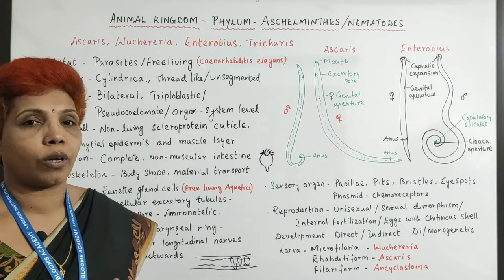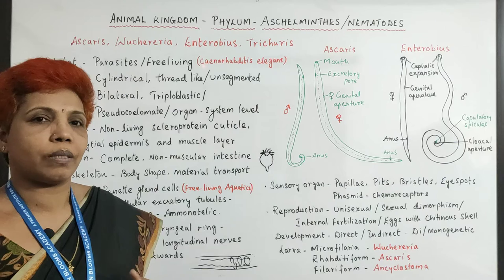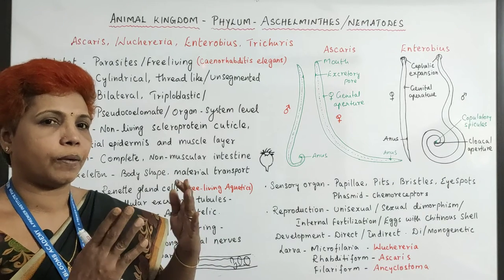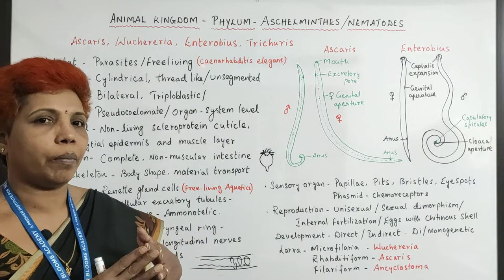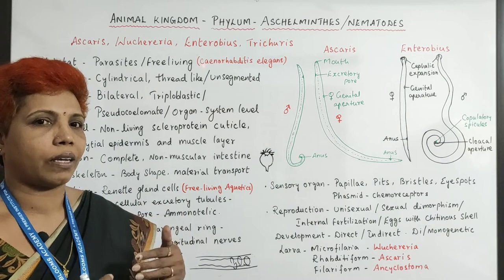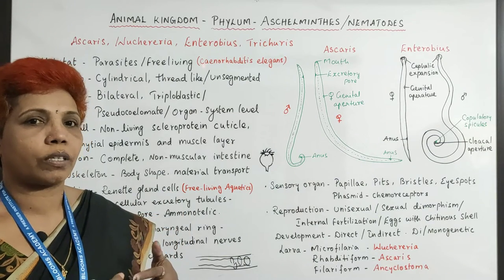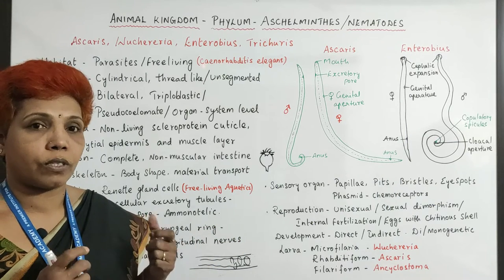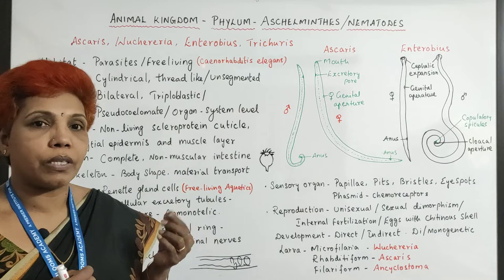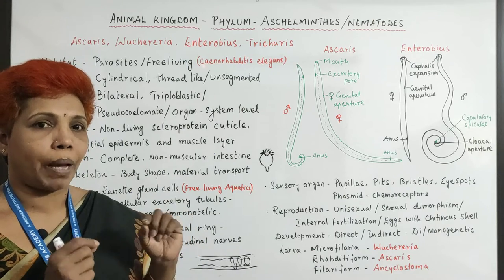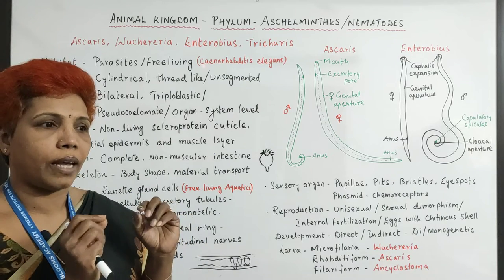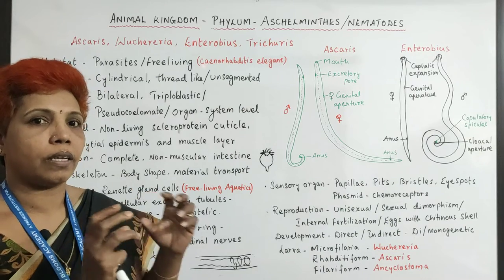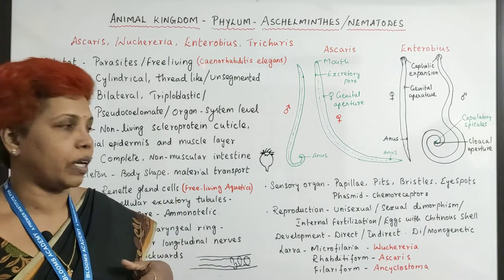When talking about sense organs — unlike in Planaria where sense organs were lagging — here different sense organs are present. The phasmid is there for sensing chemicals. They also have bristles and small pits or papillae — small outgrowths that sense what is happening around the body, and they move accordingly.